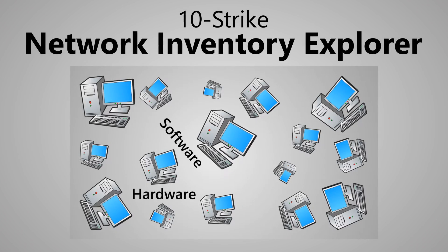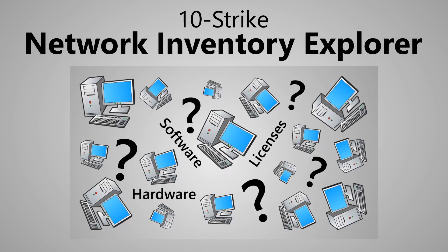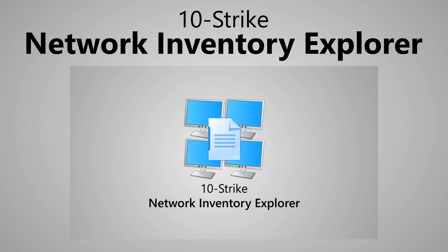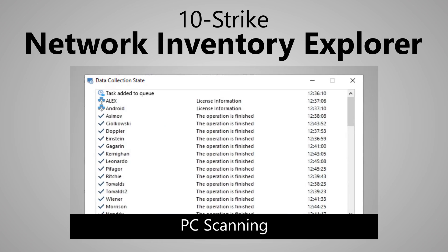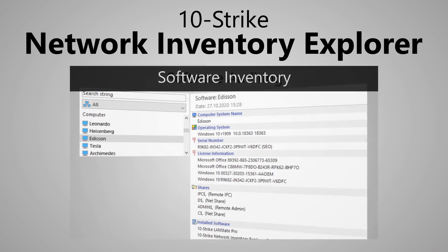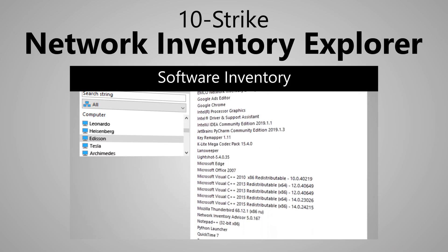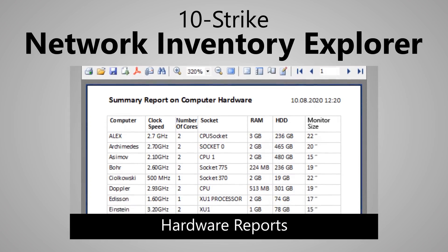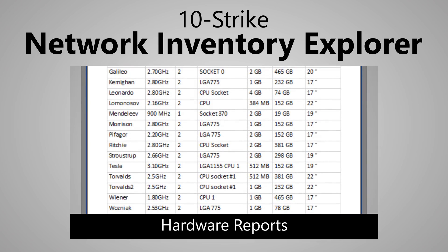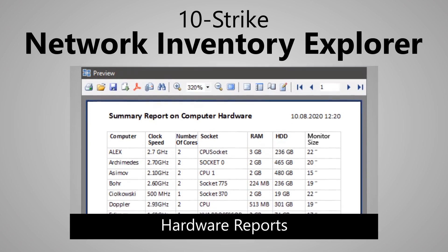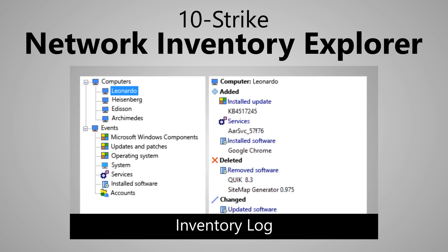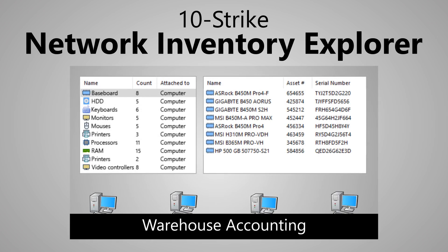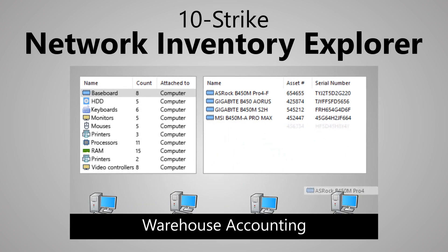If you want to get more information about the enterprise computers over the network, use the 10-Strike Network Inventory Explorer program. It scans all computers on the network and creates a database storing information on installed programs, licenses, and PC hardware. You can create reports on all the collected information. The program tracks changes in programs and hardware, and if something has changed, you will know about it. There is also a warehouse management function for spare parts and new computers.